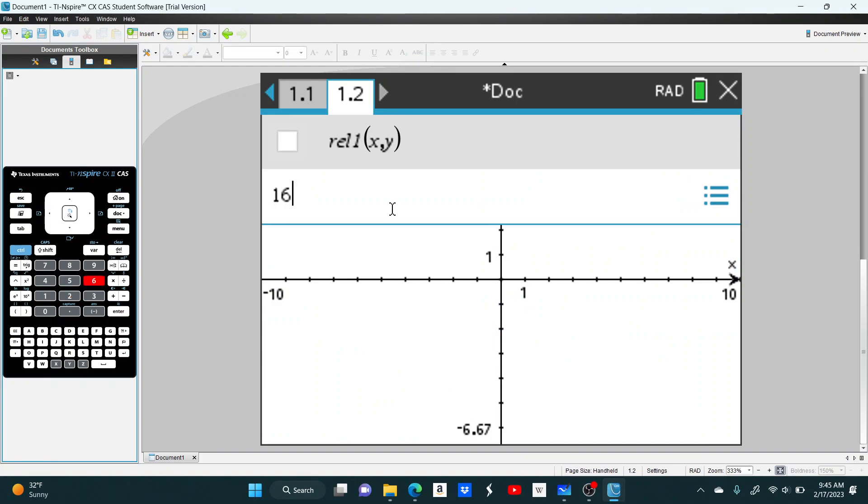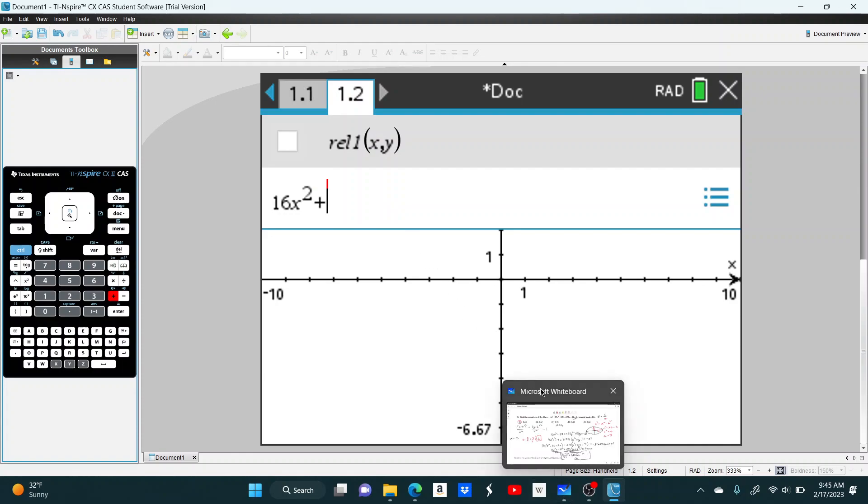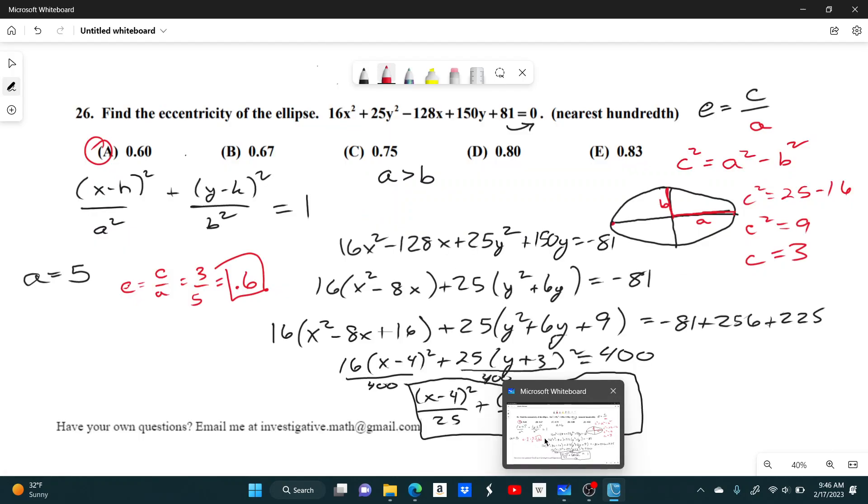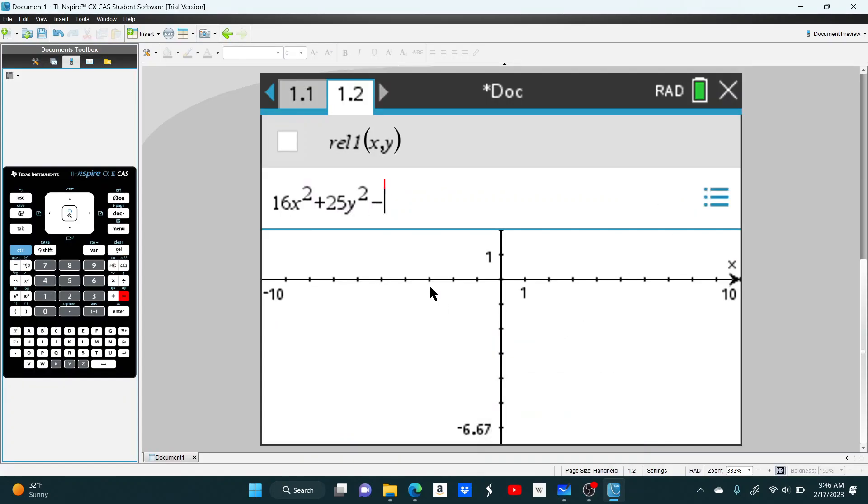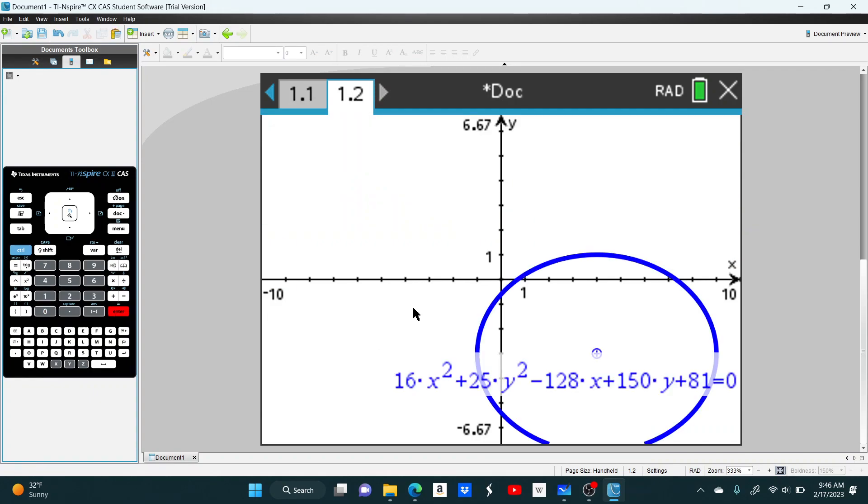So our equation is 16x squared plus, so I'm going to have to go back and forth a while. Okay, so plus 25y squared minus 128x plus 150y plus 81 equals zero. And we get this ellipse.